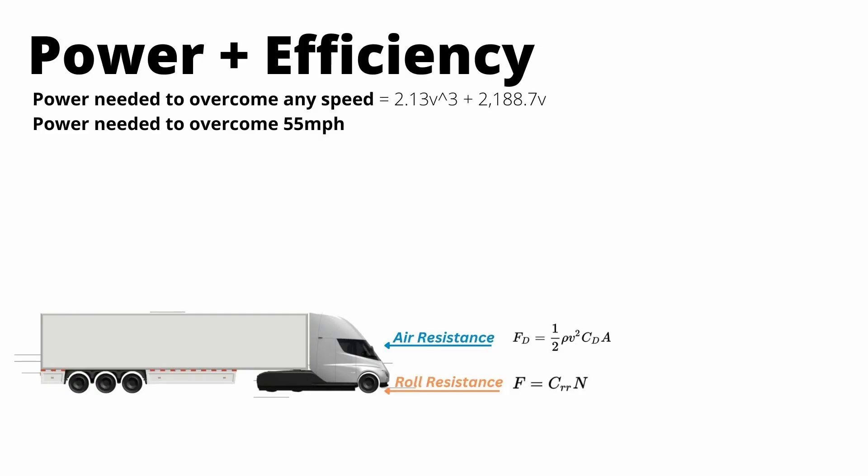So in California, the speed limit for semi-trucks is 55 miles an hour, and that's the speed we're going to use. Power required to overcome forces at 55 miles an hour is really easy to calculate now. We just plug that into our equation, and we see that it takes about 32 kilowatts to overcome air resistance and about 54 kilowatts to overcome rolling resistance, for a total power to overcome forces of about 85.5 kilowatts.